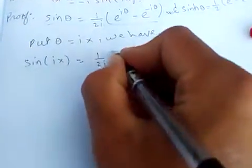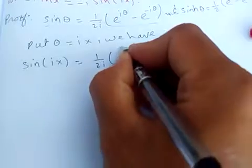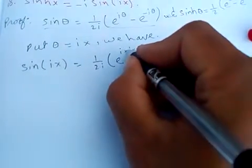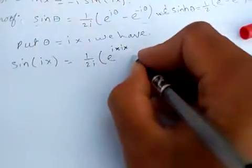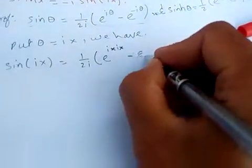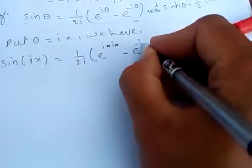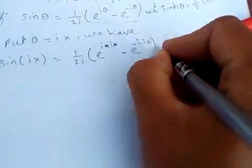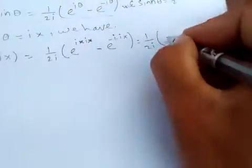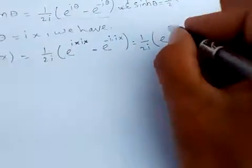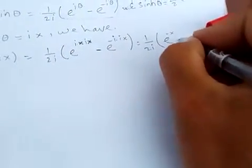This equals (1/2i) times e^(i·ix) minus e^(-i·ix). Since i times i equals -1, this becomes (1/2i)(e^(-x) - e^(x)).